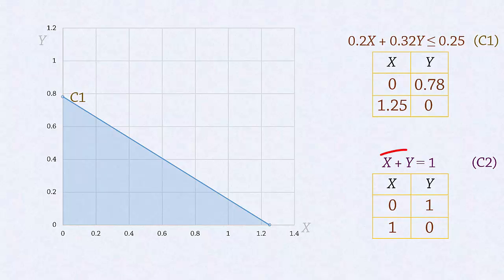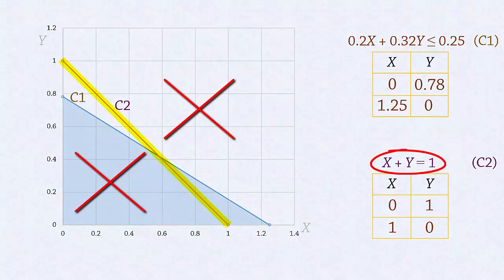For the second constraint, we have (0, 1) and (1, 0), which gives this orange line here. Now, this is an equality constraint, that is, it is only satisfied on the line, not below it and not above it, only on the line.